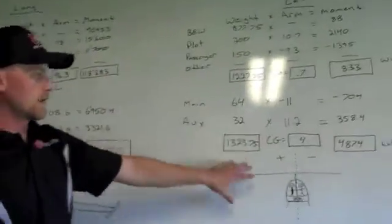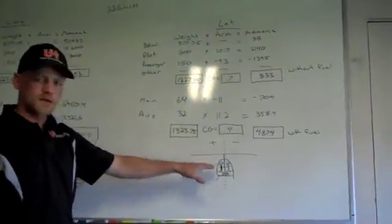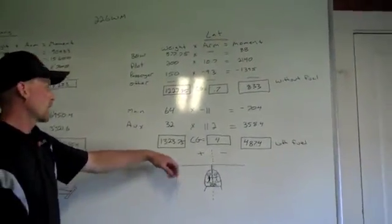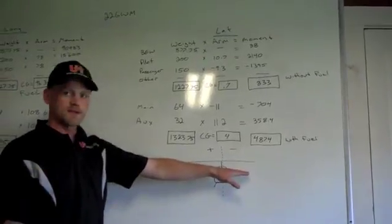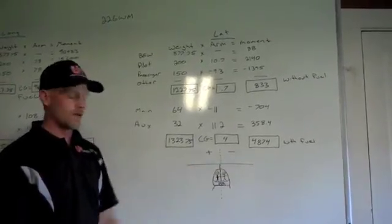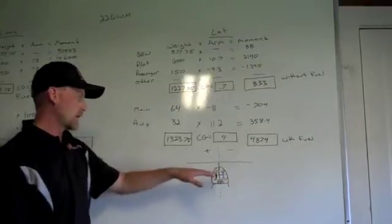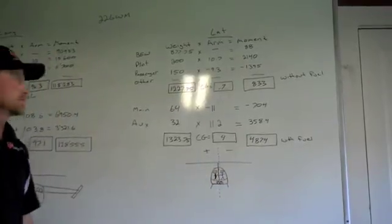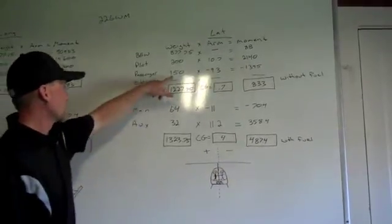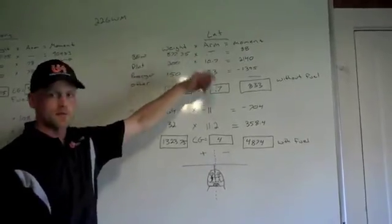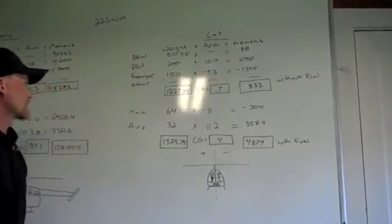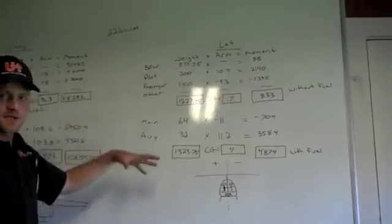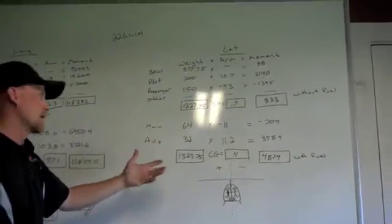Then I will do the lateral side. This is where we start dealing with negative numbers. The right side as we are looking forward at the aircraft is going to be negative, and on the left side is going to be positive. The passenger sits on the negative side and the pilot on the positive. Now we can see the difference in the numbers there, but the procedure is the same. We just have to deal with negative numbers.